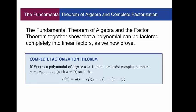We have this complete factorization theorem here. It says if p(x) is a polynomial with degree n greater than or equal to 1, there exists complex numbers a, c_1, c_2, to c_n, such that you can factor this polynomial as listed here.